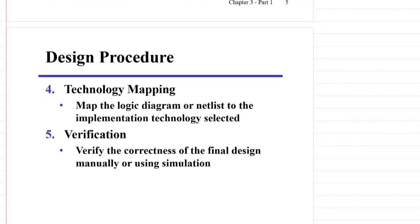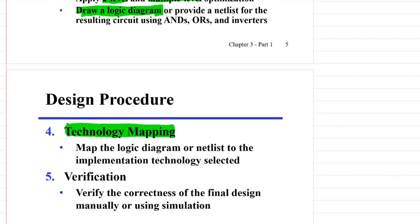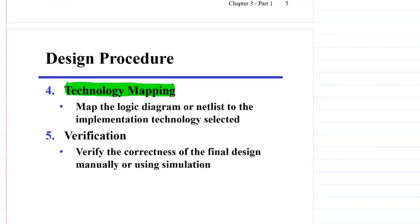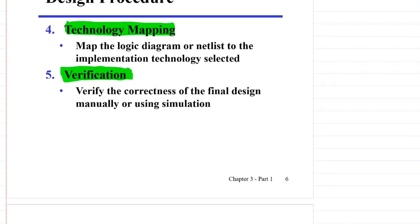Once done with optimization, the next step is technology mapping, where we map the resulting logic diagram into a new logic diagram using the required technology. For example, if we need to implement the circuit using only NAND gates, we do the technology mapping. Finally, once done with technology mapping, we perform verification — we verify that what we have designed and are going to implement is performing what it is supposed to do, referring back to the specification.